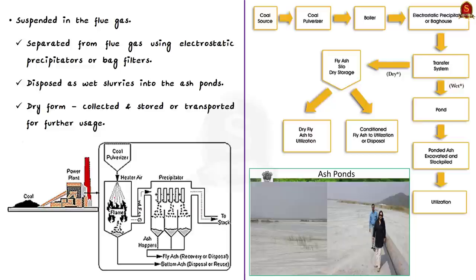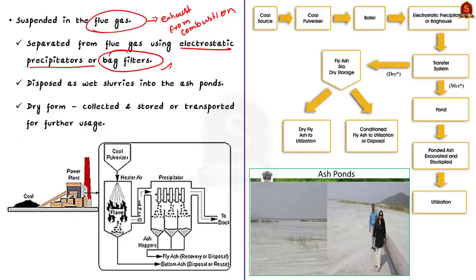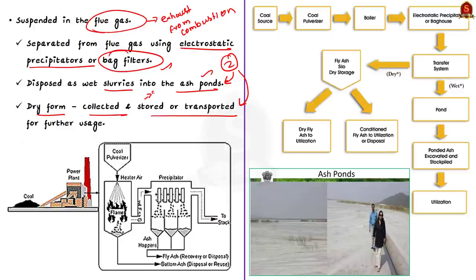Fly ash is actually suspended in the flue gas from the thermal power plants. Flue gas is the exhaust gas that comes from combustion plants. Before letting out the flue gas, the fly ash is removed from it. It is removed by particulate matter emission control devices such as electrostatic precipitators or bag filters. After this removal, fly ash is disposed off in two forms: one is in wet form, where it is disposed off as wet slurries into ash ponds, and the other is in dry form, where it is collected and stored in silos or other bulk storage facilities. From the silos, it can also be transported for further usage.